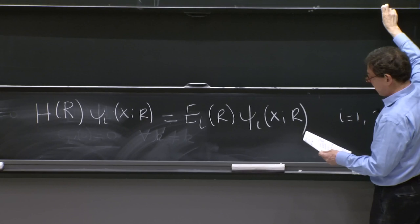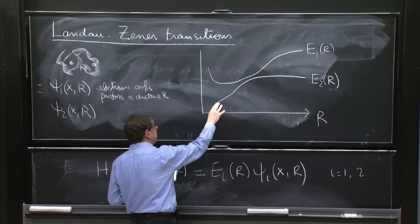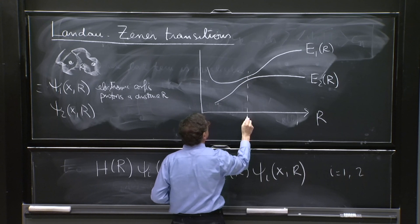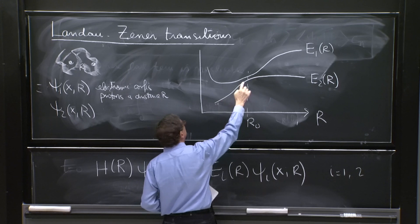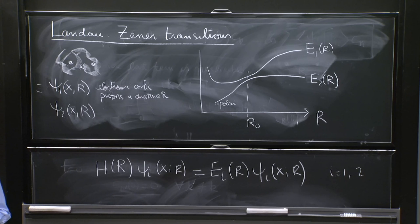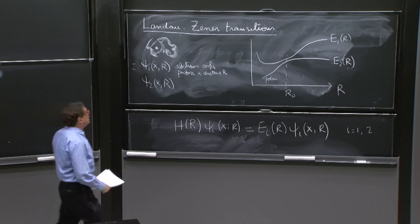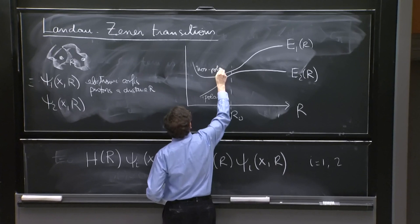So we have H of r. The Hamiltonian depends on the r. And basically, you're putting the two protons at the distance r and calculating the electrons, how they move. ψᵢ of x,r equals Eᵢ of r ψᵢ of x,r. And this is for i equal 1 and 2. The case that the people were interested in was the case where this molecule here, for example, in the state 2, for this value of r, there's a critical r₀ where the levels get very close.